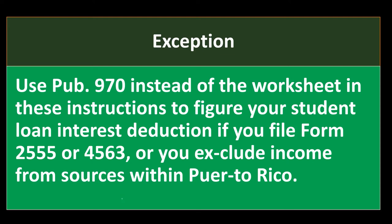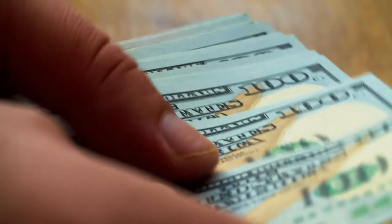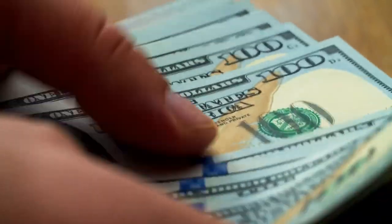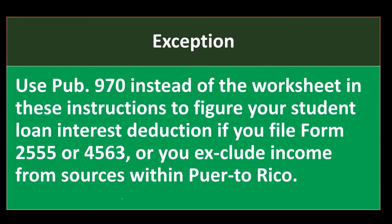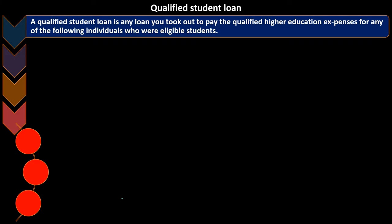Exception: Use Publication 970 from the IRS website instead of the worksheet if you file Form 2555 or 4563, or if you exclude income from sources within Puerto Rico. Now, what is a qualified student loan? You can imagine a lot of gray area here.